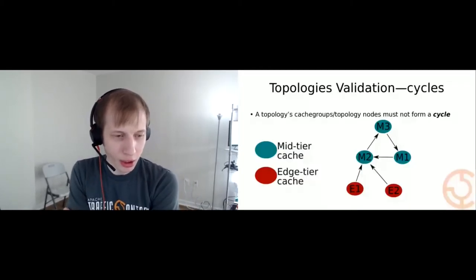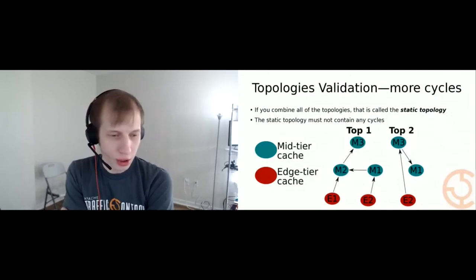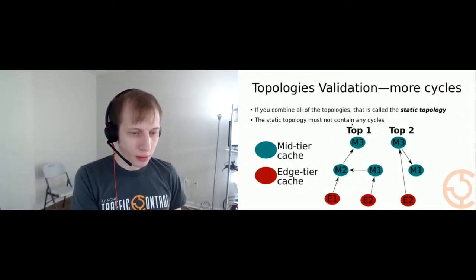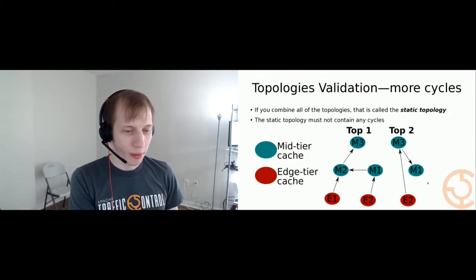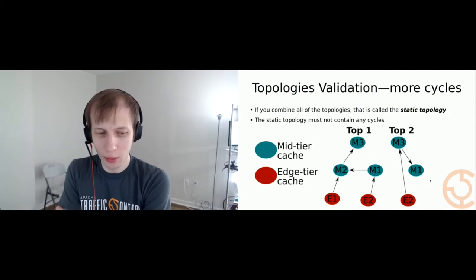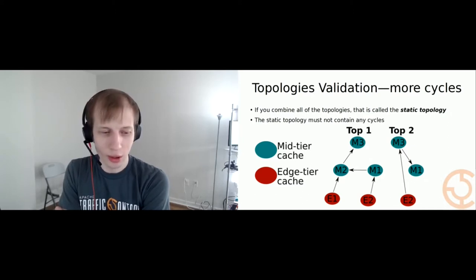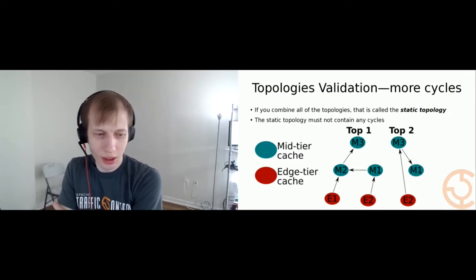Another thing we have in topologies is the concept of a static topology, if you were to combine all of the topologies. We've got our first topology and here we've got the second topology. Can anyone in chat tell me which cache groups have the cycle? We have E1, E2, M1, M2, and M3. The cycle is E1, M2, and M3.